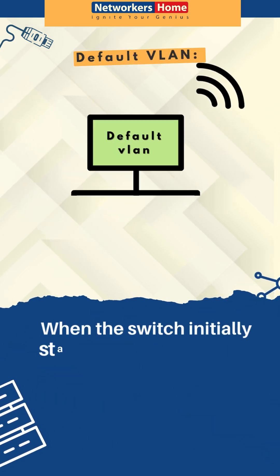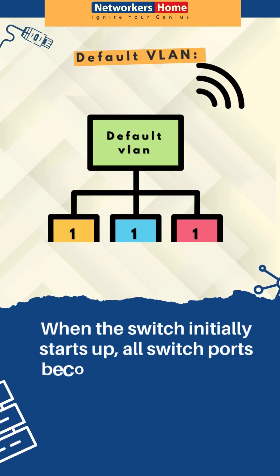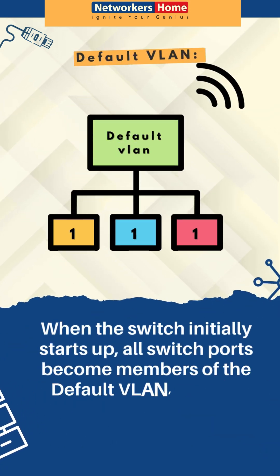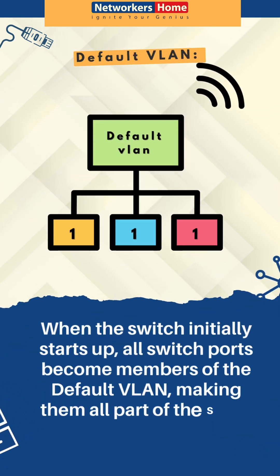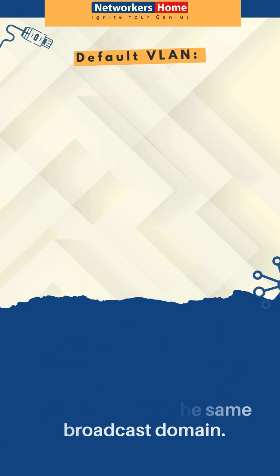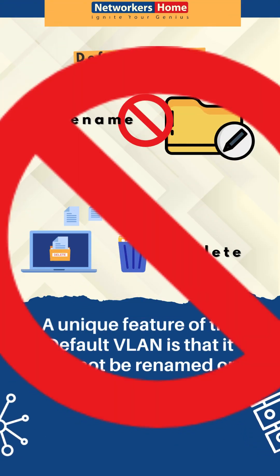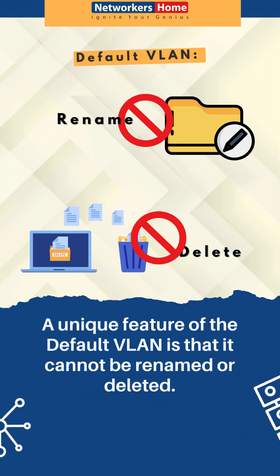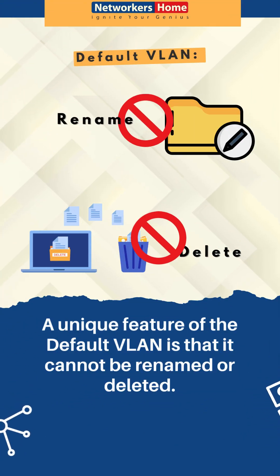When the switch initially starts up, all switch ports become members of the default VLAN, making them all part of the same broadcast domain. A unique feature of the default VLAN is that it cannot be renamed or deleted.